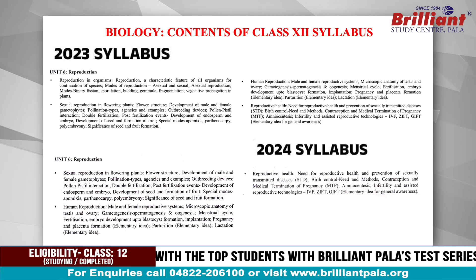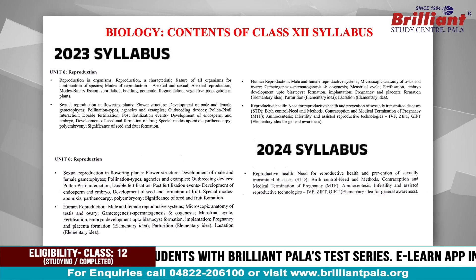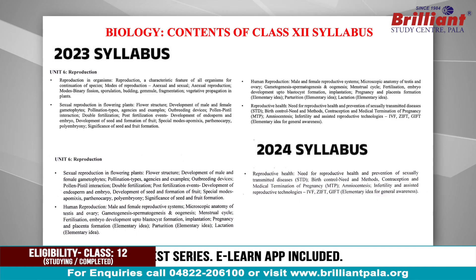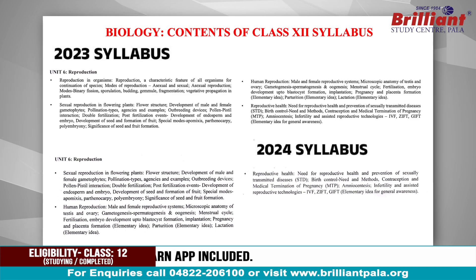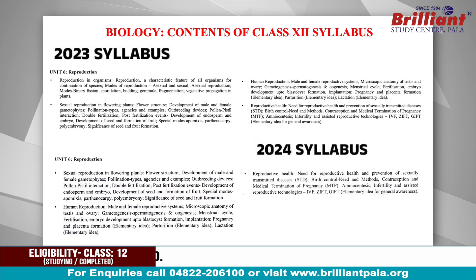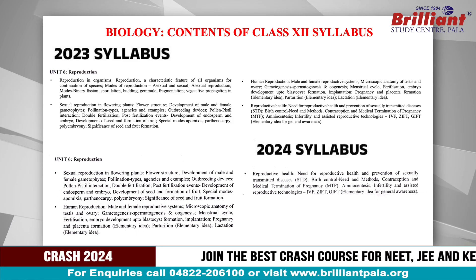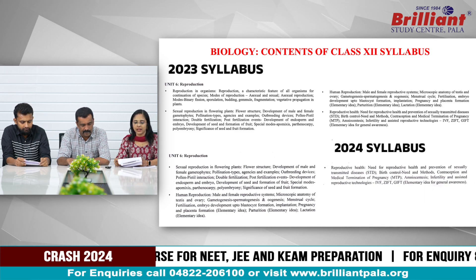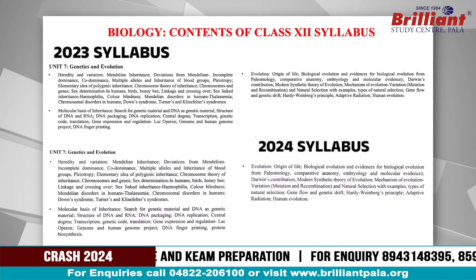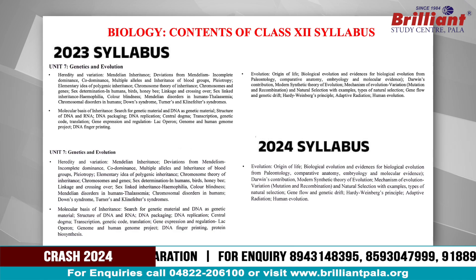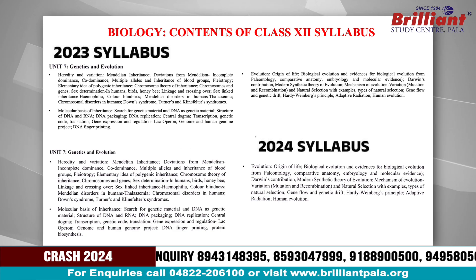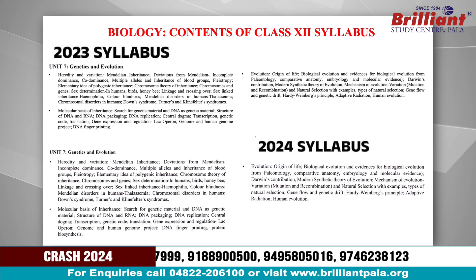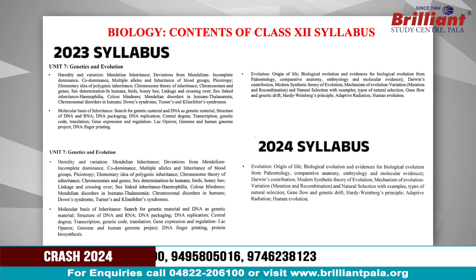In the second year, we will start with reproduction in organisms and sexual reproduction in flowering plants. We will start plant pollination. The second chapter is related to genetics and evolution. In genetics, the topics include mental effects, exceptions, chromosomal disorders, and sexual disorders.